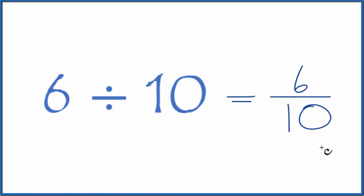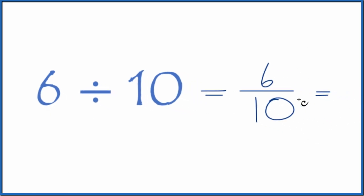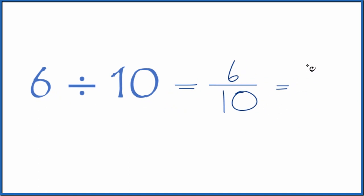We can simplify this since these are both even numbers. Let's divide 6 by 2 and 10 by 2. 6 divided by 2 is 3, 10 divided by 2 is 5.